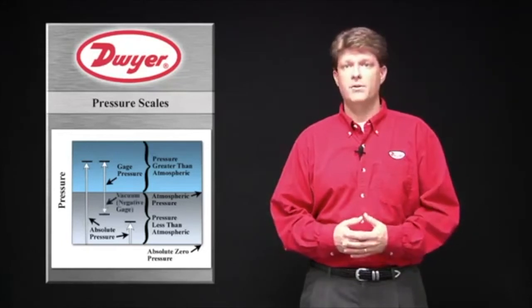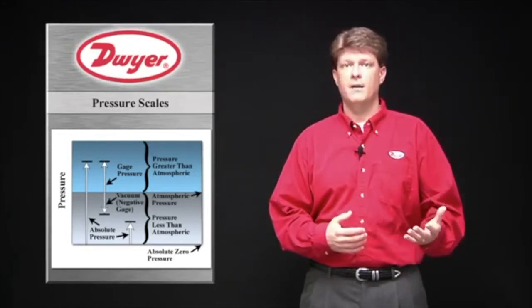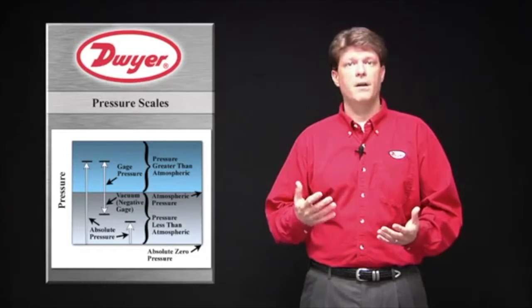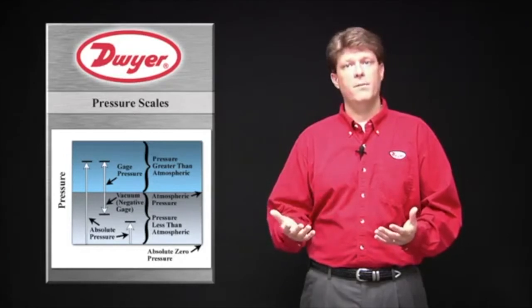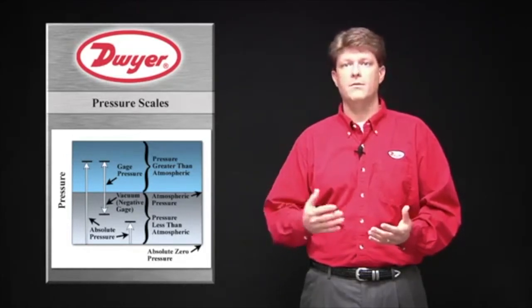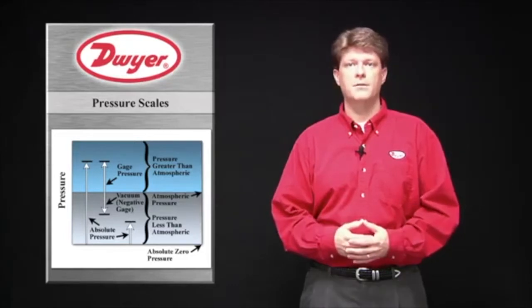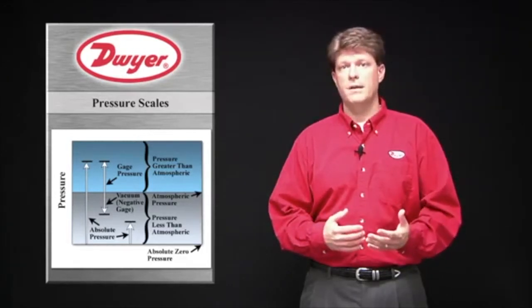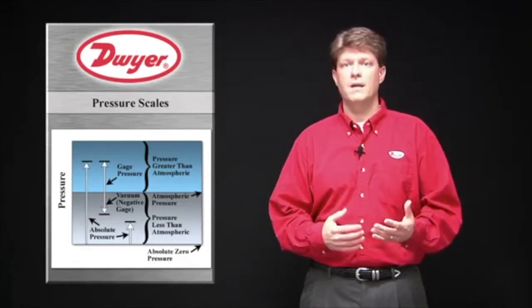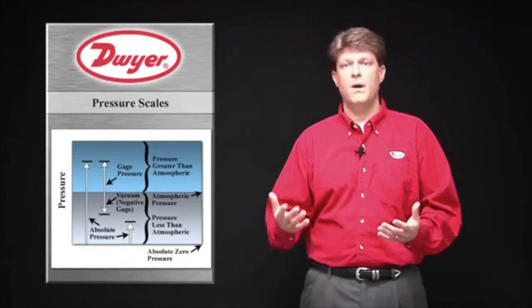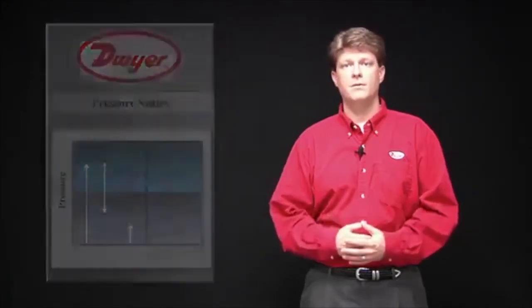Gauge pressure becomes negative when reading in a vacuum. Gauge pressure can vary as atmospheric pressure changes from altitude or weather patterns, which will affect high accuracy applications. Most pressure reading instruments read gauge pressure, as the reference side of the sensor is open to atmospheric pressure.